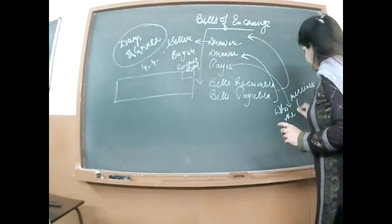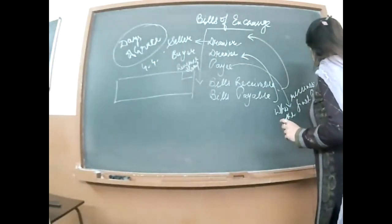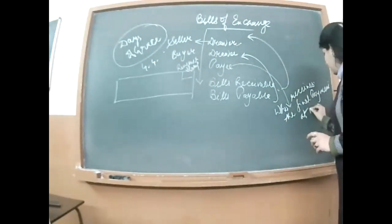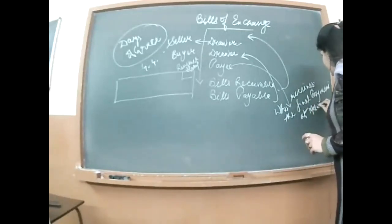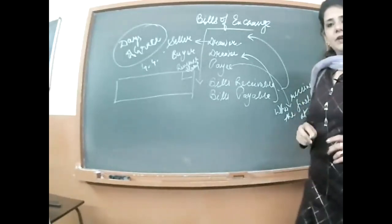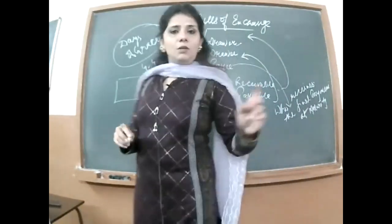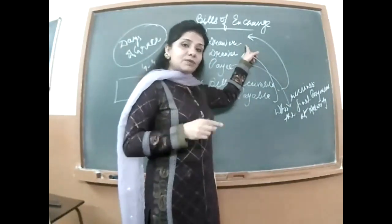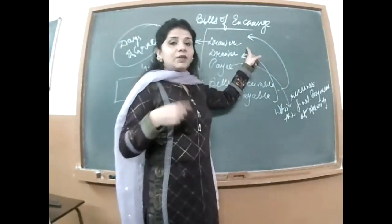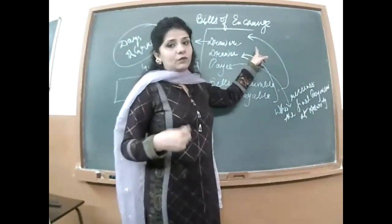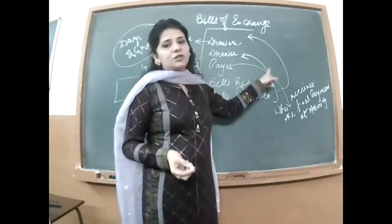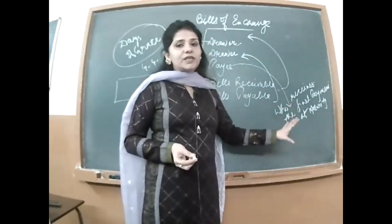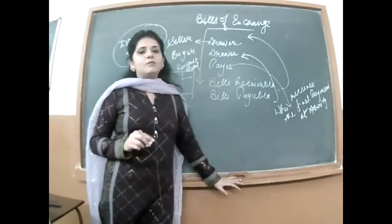In this chapter we will also discuss days of grace — teen extra days diye jaate hain drawee ko paisa arrange karne ke liye. So if a bill is issued on 1st January for 3 months, maturity would normally be 1st April. Payee means: who receives the final payment at the time of maturity of the bill.